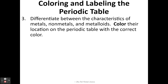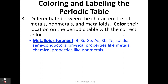We need to be able to differentiate between the characteristics of metals, non-metals, and metalloids. We are going to color their location on the periodic table with the correct color. Your metalloids are going to be orange. Your metalloids are boron, silicon, germanium, arsenic, antimony, tellurium, and polonium. These are solids and they are semiconductors. Physically they have properties like metals, but chemically they have properties like non-metals — so they are metalloids.